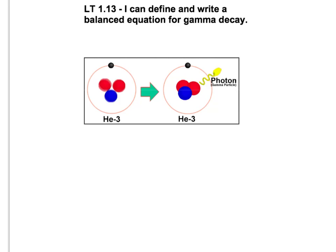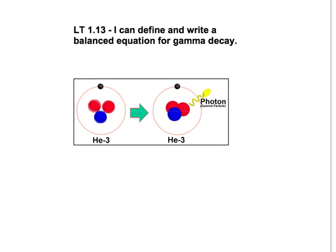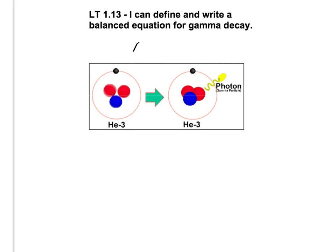Let's look at our example in the box below. Helium-3 has a lot of energy. It is very energetic and it needs to somehow relieve the energy. So what it's going to do is undergo what we call gamma decay.